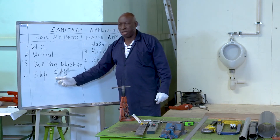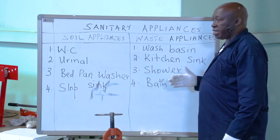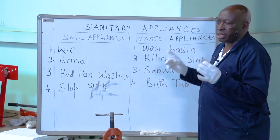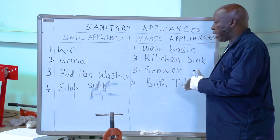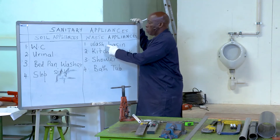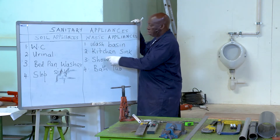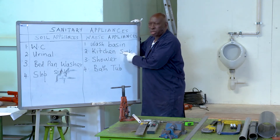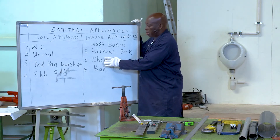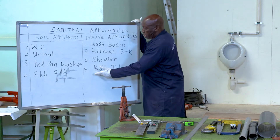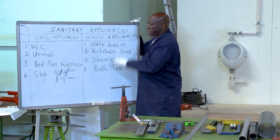The second category of appliances is waste appliances. These appliances handle only soapy water; they do not handle waste from human beings. They include a wash basin — used for brushing teeth and washing your face — a kitchen sink where we wash dishes, a shower where we use soap to wash the external part of our body, and a bathtub. These are called waste appliances.